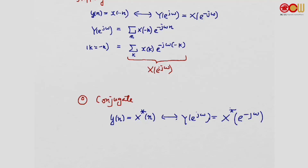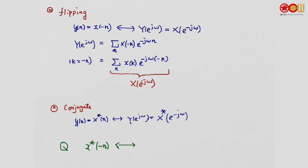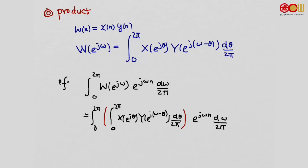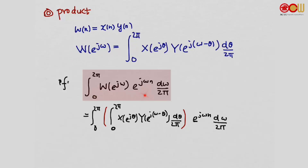When we have flipping and conjugate combined, the Fourier transform is simply the conjugate of the Fourier transform of x. We leave this as an exercise. Product property: if we have a sequence w[n] that is the product of x[n] and y[n], then the Fourier transform W is given by the integral from 0 to 2π of X(e^{jθ})·Y(e^{j(ω−θ)}) dθ/2π. We can prove this by applying the inverse Fourier transform on W and verifying that the time-domain sequence is indeed the product of x and y.